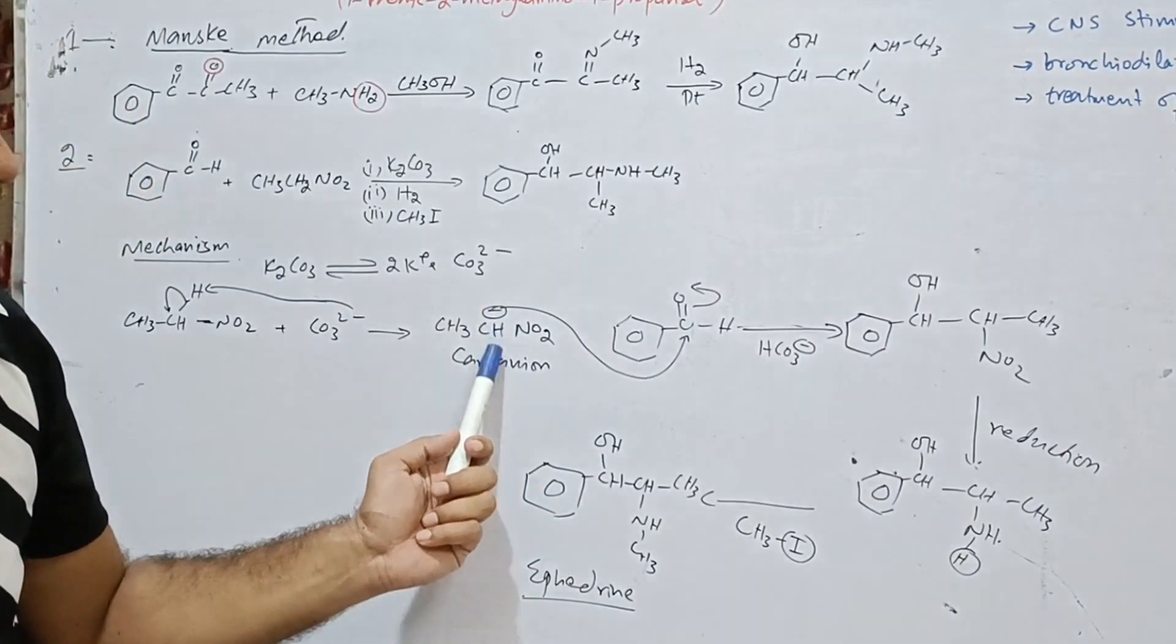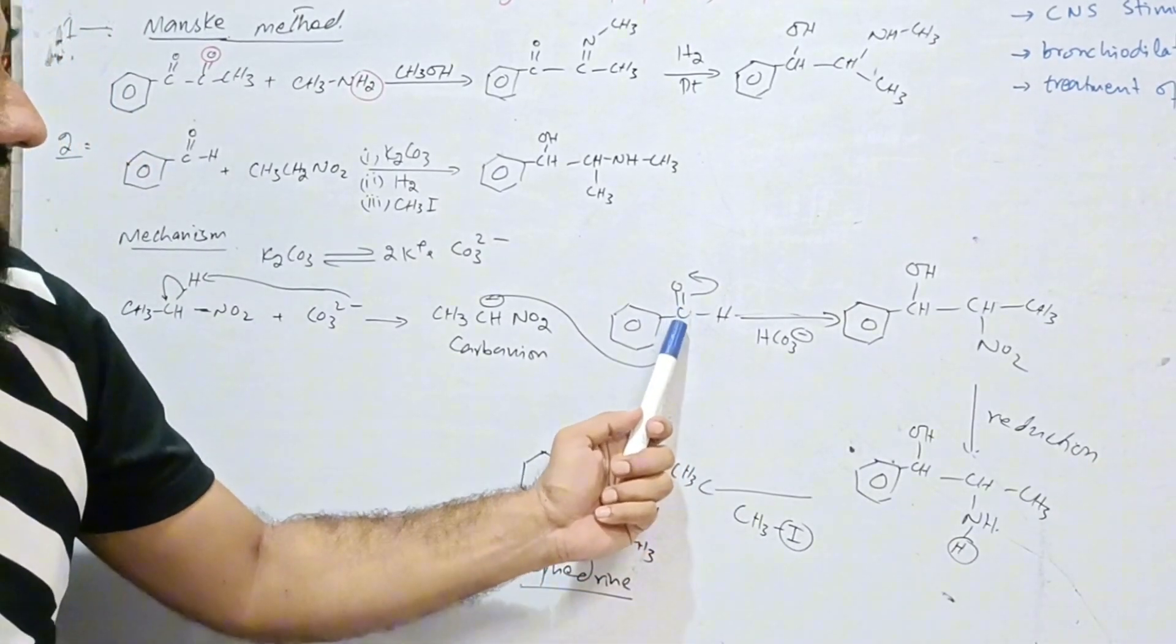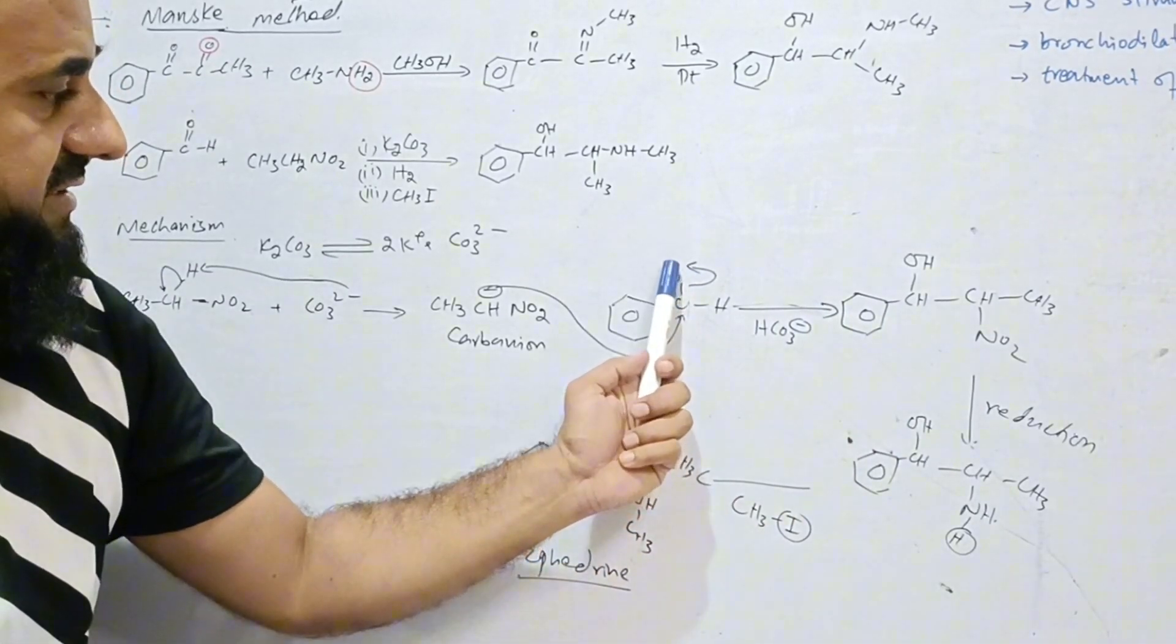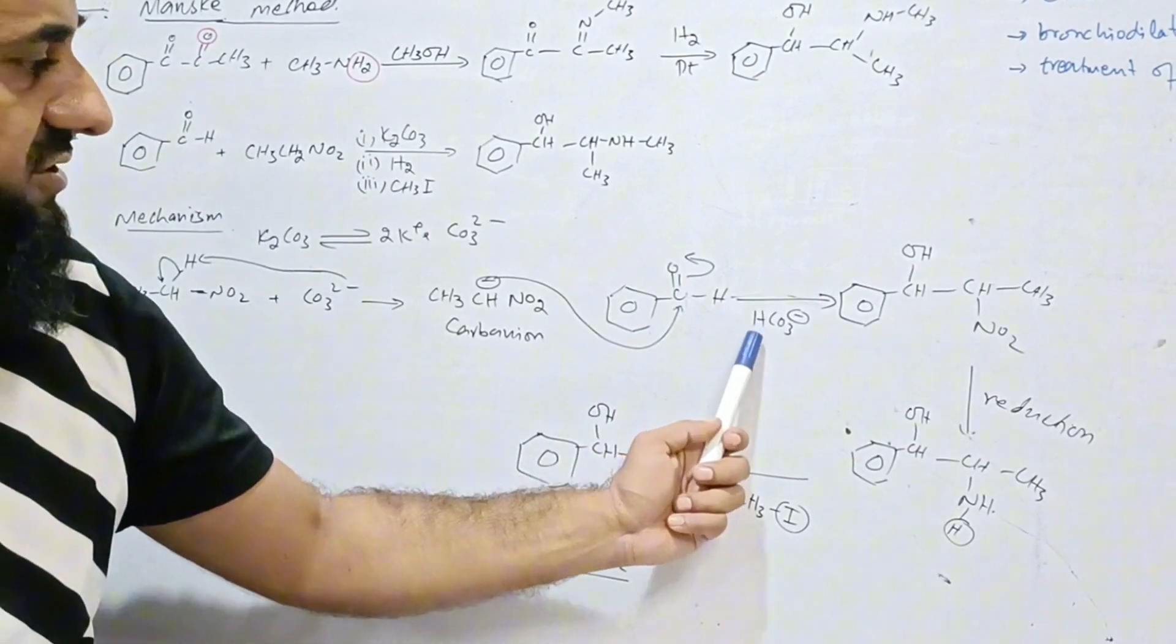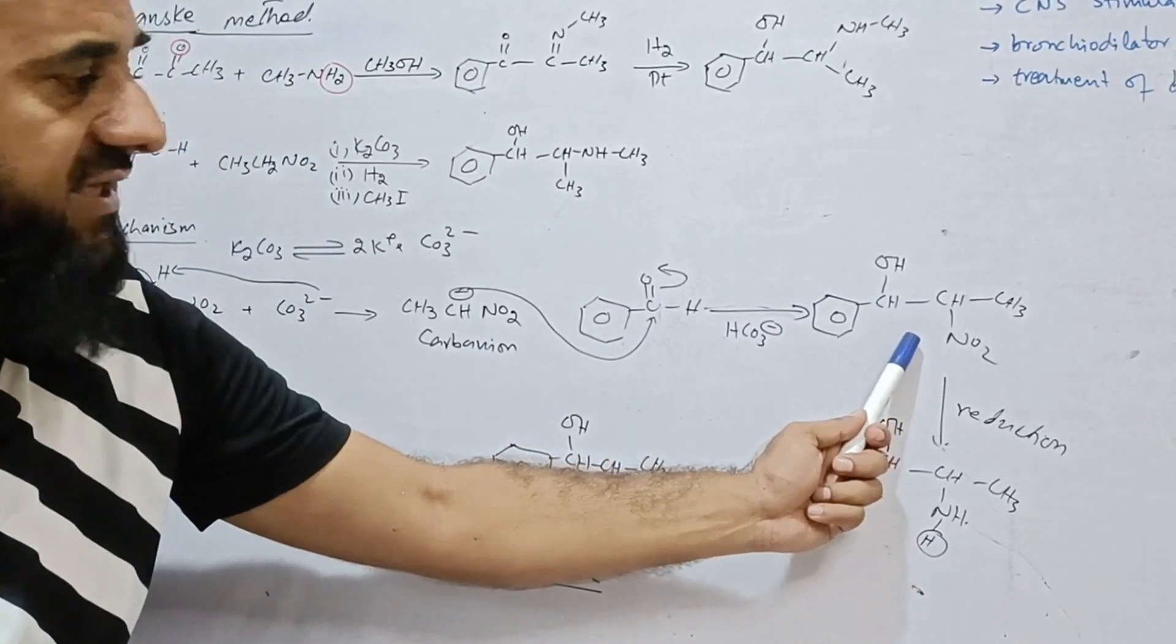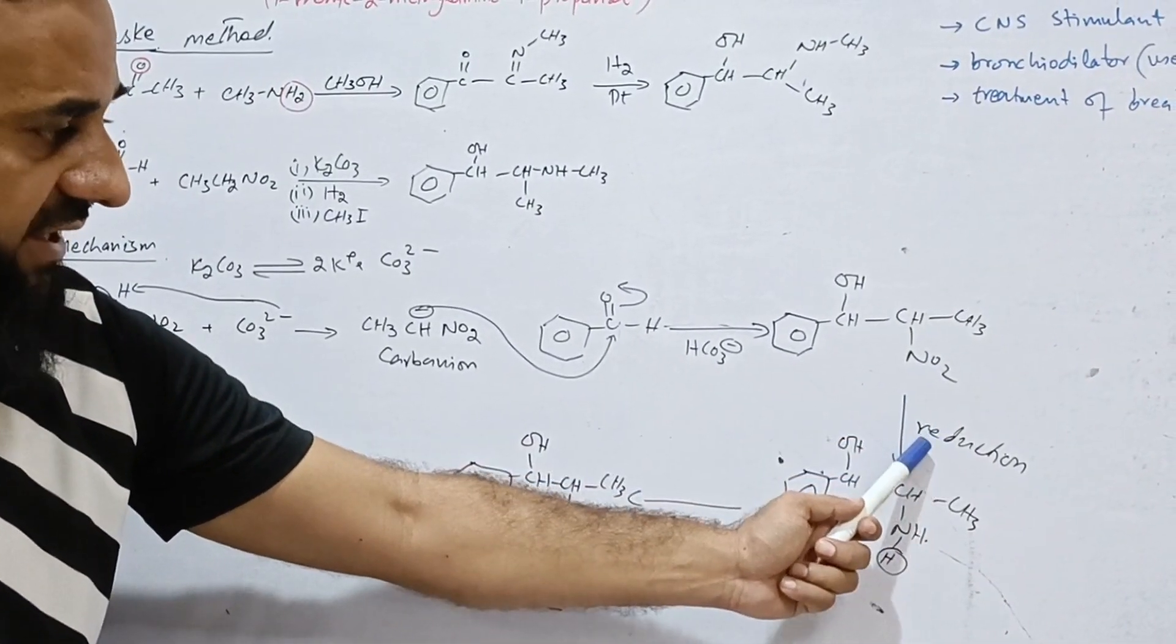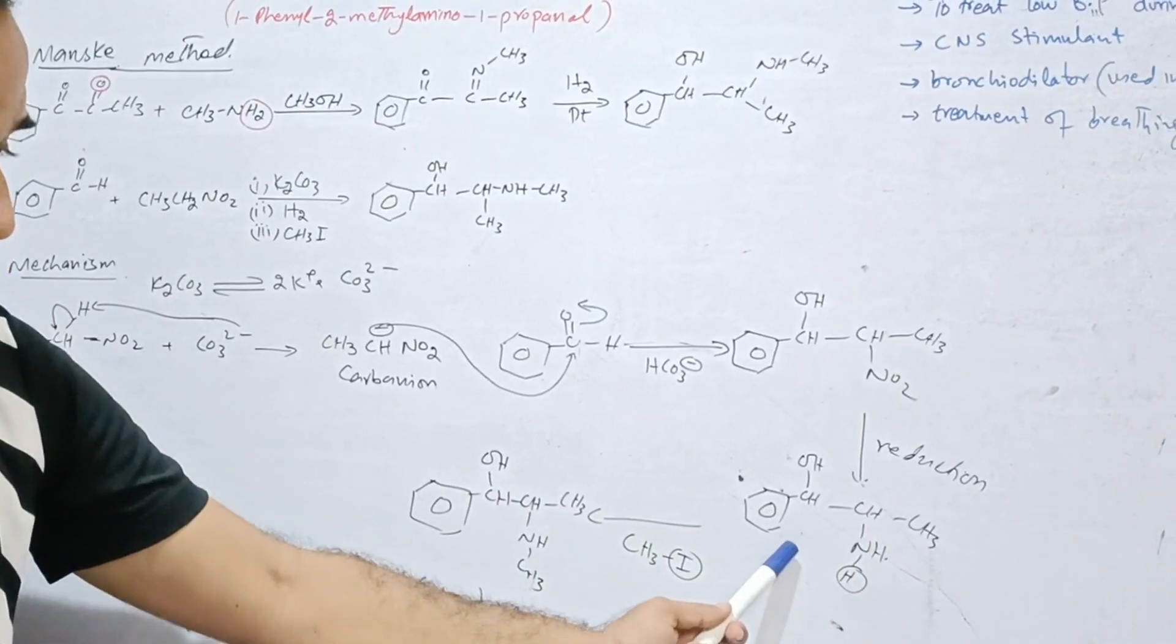So this carbanion attacks on the partially positive carbon of benzaldehyde. And simultaneously, this negative charge is utilized by this hydrogen provided by the bicarbonate. And we get this structure. Now this structure is reduced in the presence of hydrogen, and we get this structure.